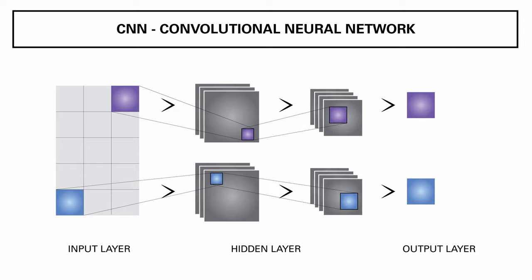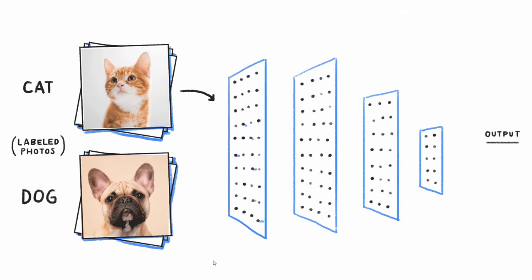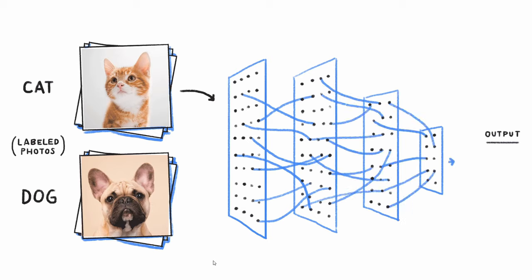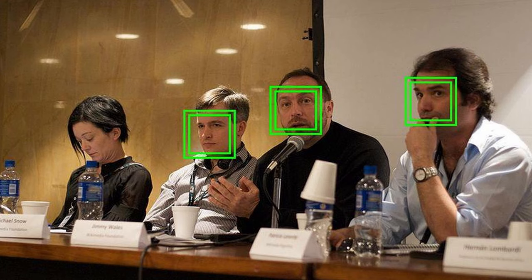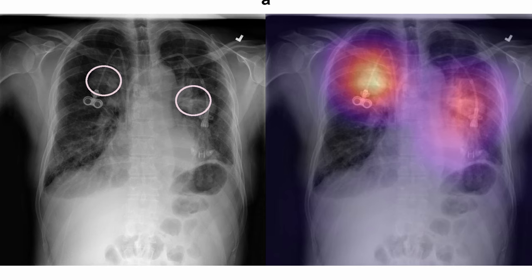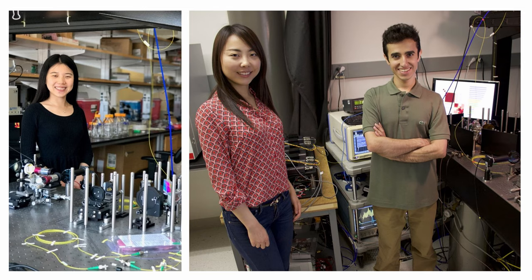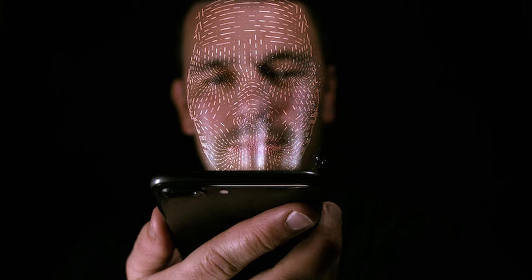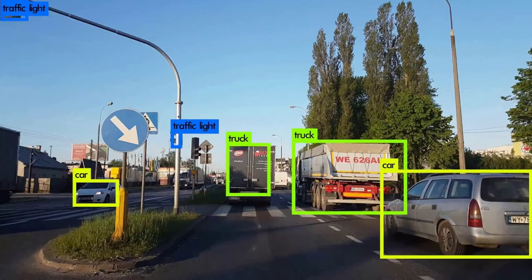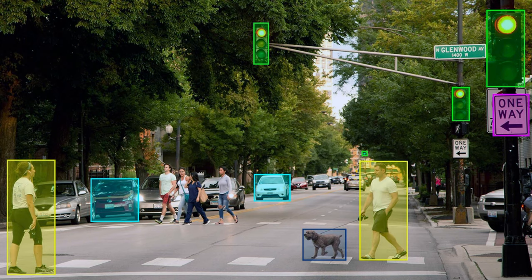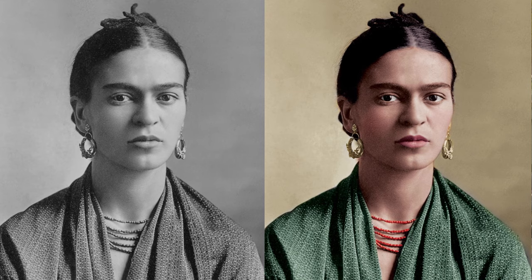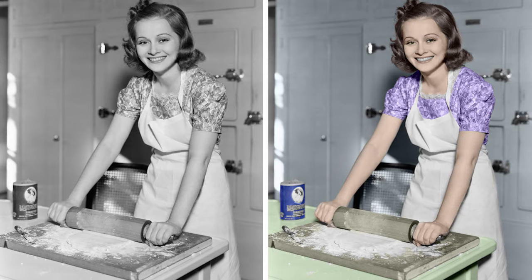The second is CNN, or convolutional neural network. These algorithms mainly analyze visual data like images and videos. CNN captures spatial features from an image, like the arrangement of pixels, to correctly identify objects. Facebook uses this to automatically tag you in photos and videos or to suggest tags for your friends. It is also used in medical image analysis to diagnose patients — cancer researchers at UCLA have built an advanced microscope that trains a deep learning application to accurately identify cancer cells. You can also unlock your phone with face detection through CNN algorithms.